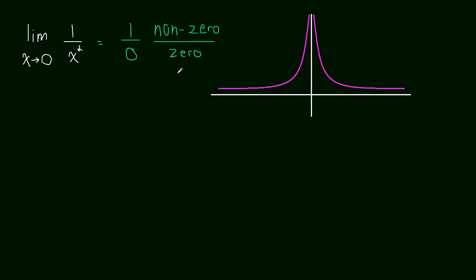And maybe you remember from a pre-calculus class that this tells you that at zero there's a vertical asymptote. And we can clearly see that from the graph of the function that there's a vertical asymptote at zero.